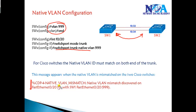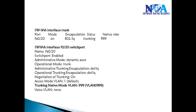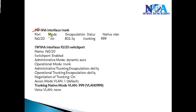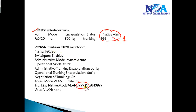If there is a native VLAN mismatch, you will see a console message on the screen such as 'native VLAN mismatch'. For verification, use the command 'show interface trunk'. By default, if you haven't changed the native VLAN you'll see it as VLAN 1, but if changed to 999 it will reflect that. You can also use 'show interface f0/20 switchport' to see that information.